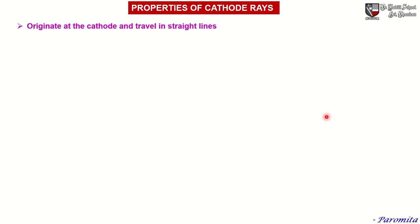Now let us discuss the properties of cathode rays. Cathode rays originate at the cathode and travel in straight lines. When an object is placed between the cathode and the anode, a shadow of the object falls on the wall opposite to the cathode. We know that a shadow can be formed only when the rays travel in a straight line, so cathode rays travel in straight lines.